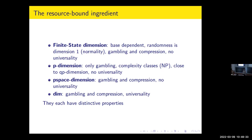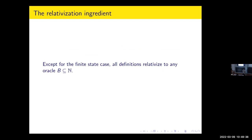What happens is that except for finite-state dimension, they can all be relativized — you can put oracles in most effectivizations, in the gambling or the complexity or both. I'm going to show you the point-to-set principle next. The point-to-set principle is always presented as a way of getting back classical Hausdorff dimension. I also want to use it as a comparing tool between all these resource bounds.